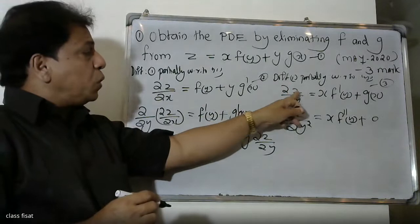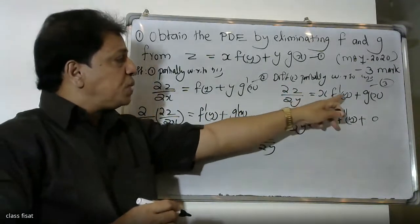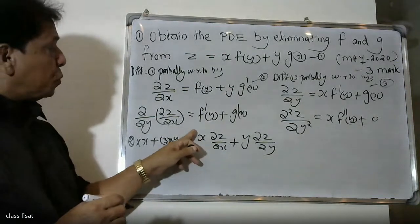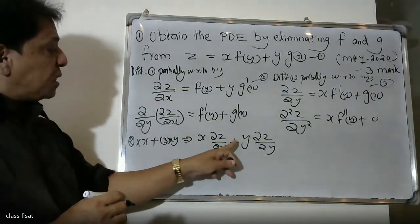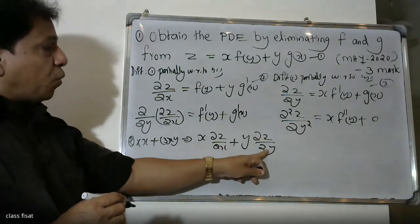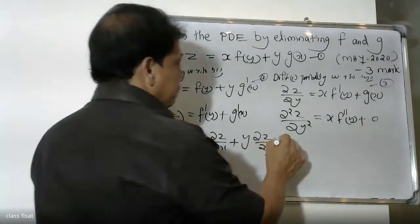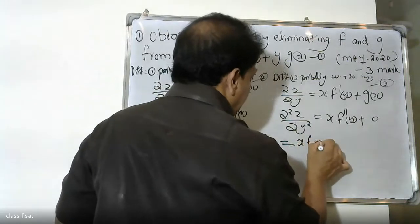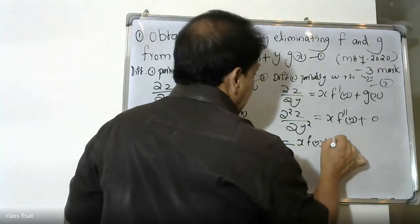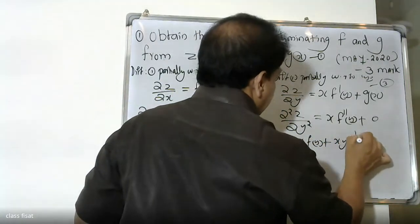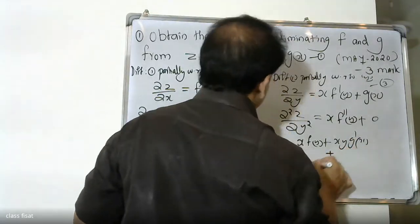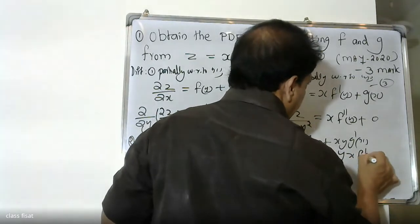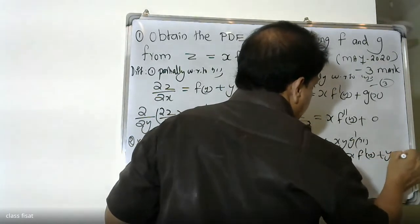Multiplying equation two by x and equation three by y and adding: x into dou z by dou x plus y into dou z by dou y is equal to x into f of y plus xy into g dash x plus yx into f dash y plus y into g of x.